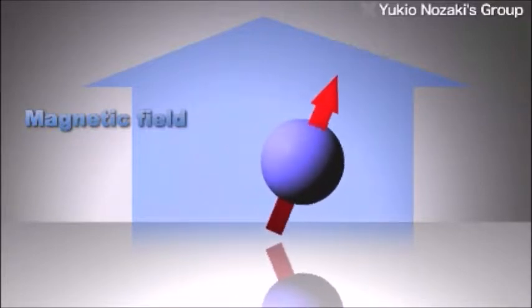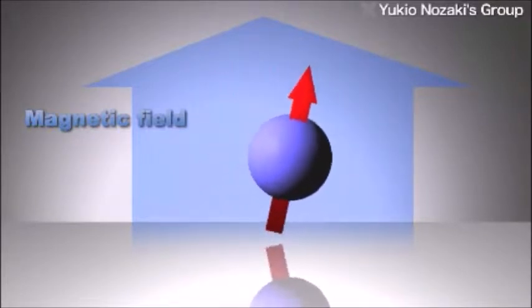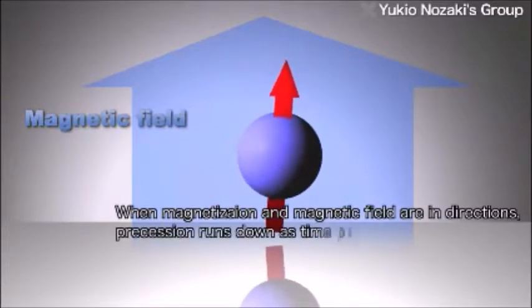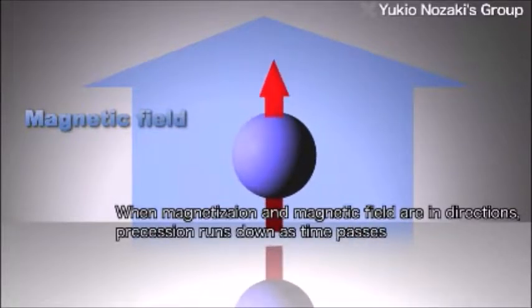However, if the direction of spin is different from the magnetic field's direction, the magnetic energy is raised from the ground state energy. So as time passes, energy is dissipated, and eventually the precession runs down.